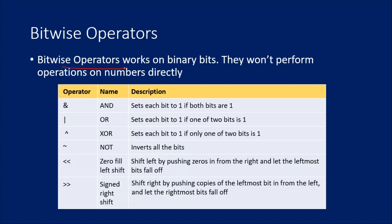As we discussed in our past video, bitwise operators don't work on numbers directly — they work on binary bits. Before watching this video, I strongly recommend watching my previous video, because there I explained a lot of things: how to convert numbers to binary and how bitwise operators actually work on binary numbers. Without that, this video may not make much sense, so better to watch part 23 first.